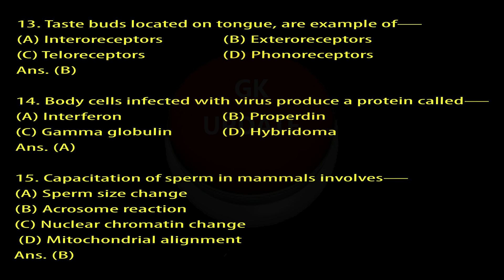Question 14: Body cells infected with virus produce a protein called — A. Interferon, B. Propertin, C. Gamma Globulin, D. Hybridoma. Answer: A.